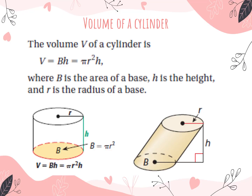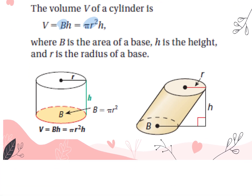For volume of a cylinder, the formula is the same as a prism: capital B times H. But capital B is the area of a circular base, which is π r squared. So volume equals π r squared times height. This applies whether it's a right cylinder or an oblique cylinder. The height is always indicated as a perpendicular segment.